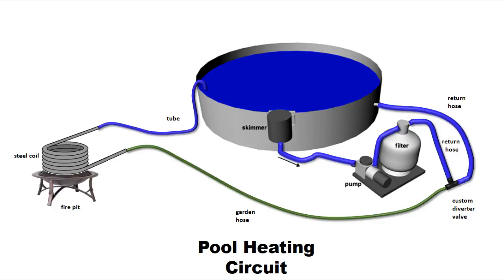The flow works the same way. Water is going to go through your skimmer, into your pump, through your filter, down the return line. At this point it would normally just go back into the pool but now it'll go in two directions through this custom diverter valve that we're going to build.